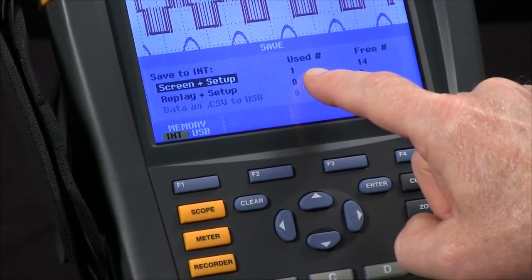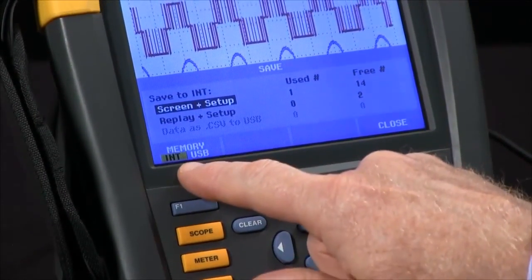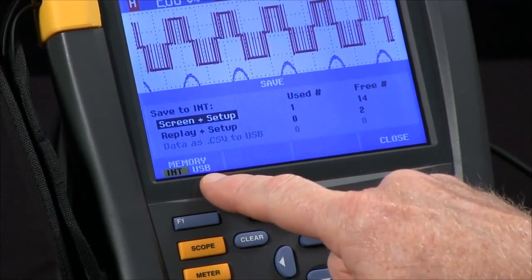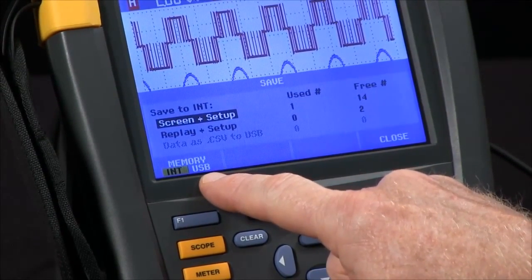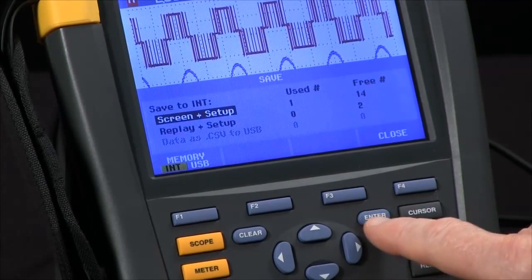We've got one location used and 14 free in memory. We're going to save to the internal memory as opposed to an external USB stick that we could plug into the side of the scope. We'll hit the Enter button to confirm.